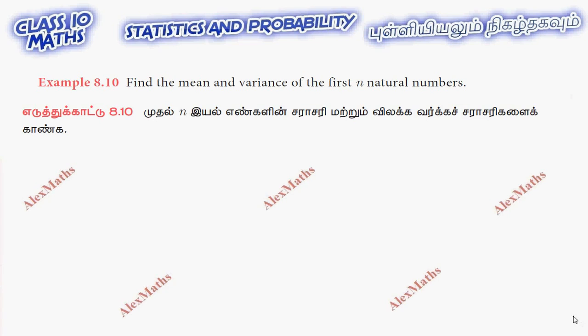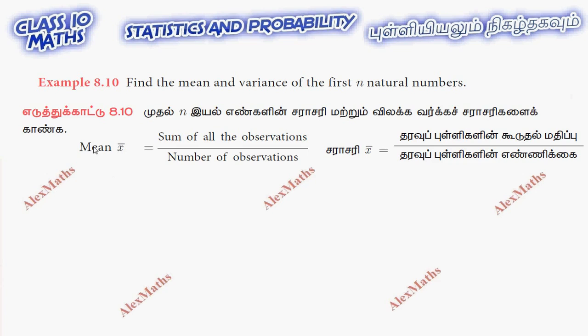Hi students, this is Alex here. Example 8.10: Find the mean and variance of the first n natural numbers. The mean formula is sum of all observations divided by number of observations.